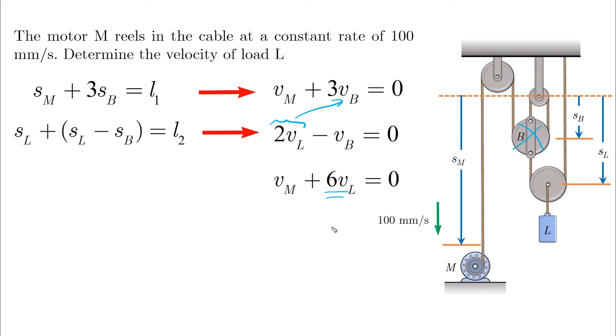And VL is found by minus VM over 6. And VM is positive down, which is 100 mm per second.